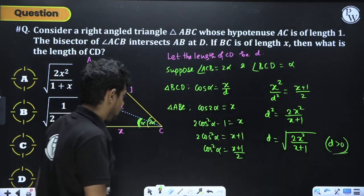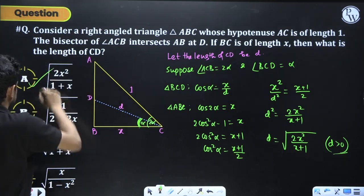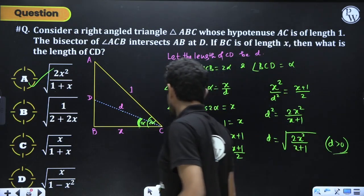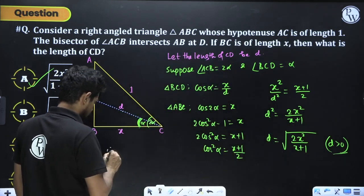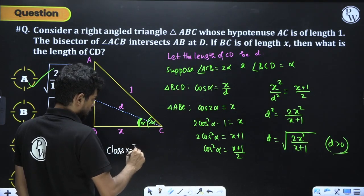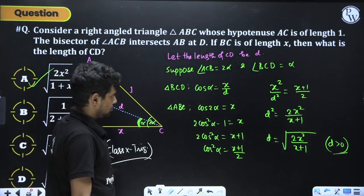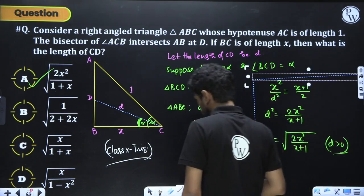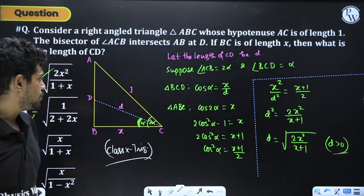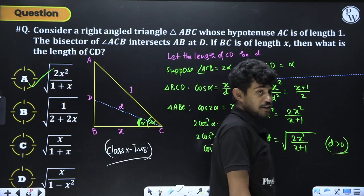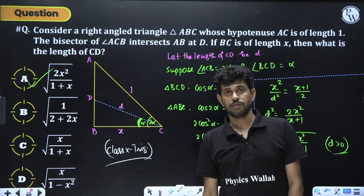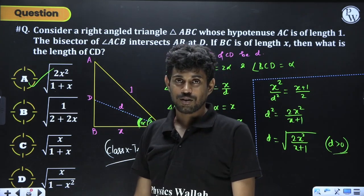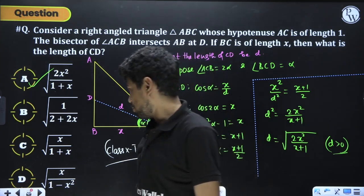This problem uses only class 10 trigonometry — just the definition of cos. It should not take more than 3-4 minutes. ISI wants you to solve some questions at an elementary level, but you need a mentally equipped strategy, because people often think this is the toughest exam and can't solve anything — but some questions are actually very easy.